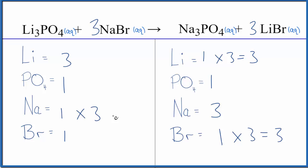One times three, those are balanced. One bromine times three, those are balanced. And we're done.